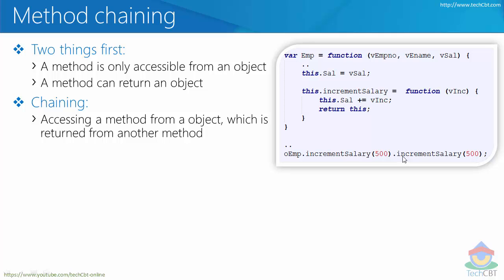Since we have the same object returned, we can further access more members or even call the same method again and again. This whole expression is effectively replaced by OEMP, because the function returns the same instance. So we can say 'OEMP.incrementSalary' once more — because increment salary is still the same method available in the same object being returned. That is called method chaining: accessing methods in a chained manner, to any infinite level, as long as the method returns the same instance.